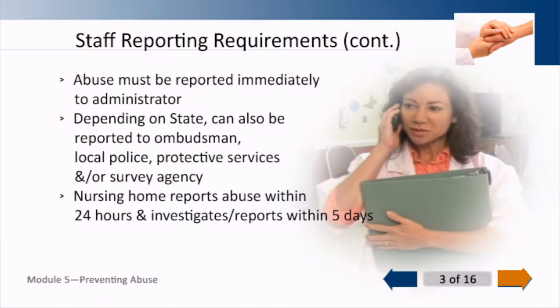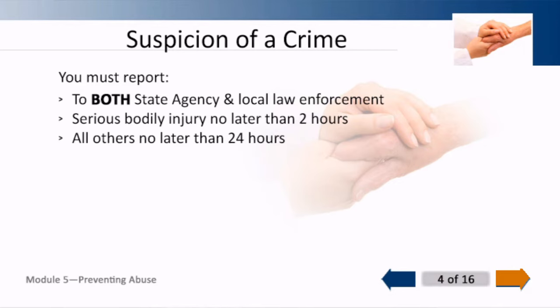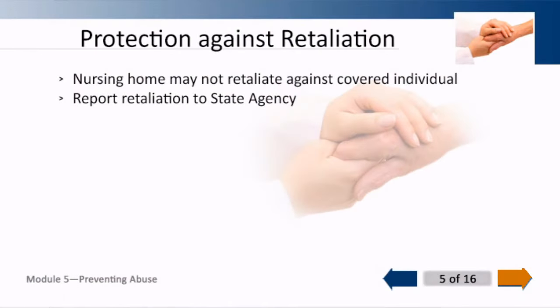Then they're going to investigate and send that investigation in within five days. You must report to both the agency and local law enforcement. Local law enforcement, if someone has been hurt or it is a major crime, must be reported within two hours. Anybody else — no longer than 24 hours. The facility cannot — I just can't tell you this enough — retaliate against you for reporting suspected abuse. They cannot, and if they do, you need to notify the state agency. There have been tags written to facilities because they retaliated or there was reasonable suspicion to believe that the facility retaliated against somebody who reported. You have that responsibility.